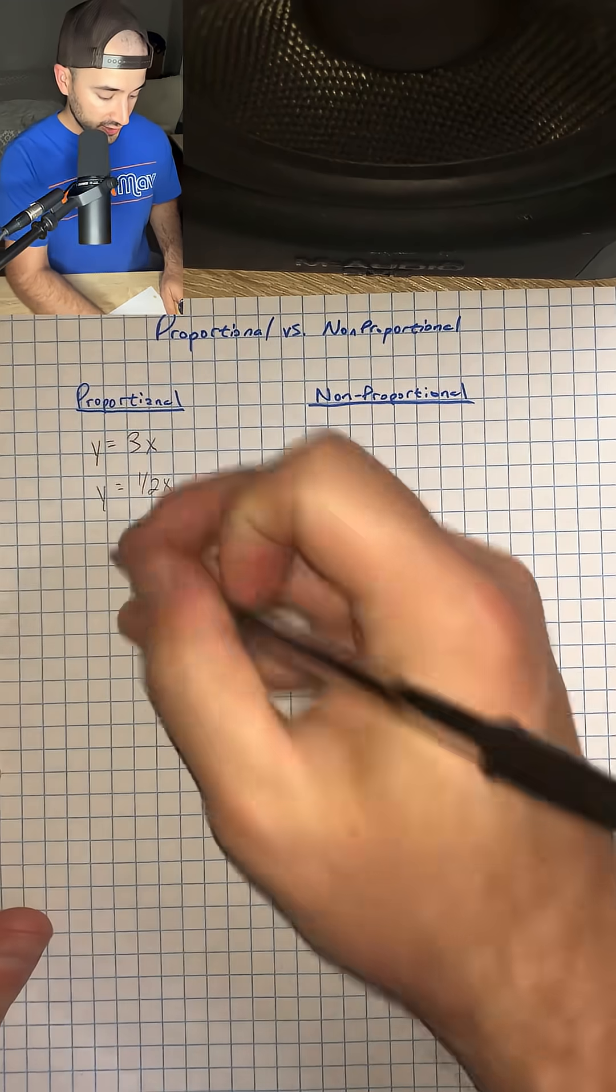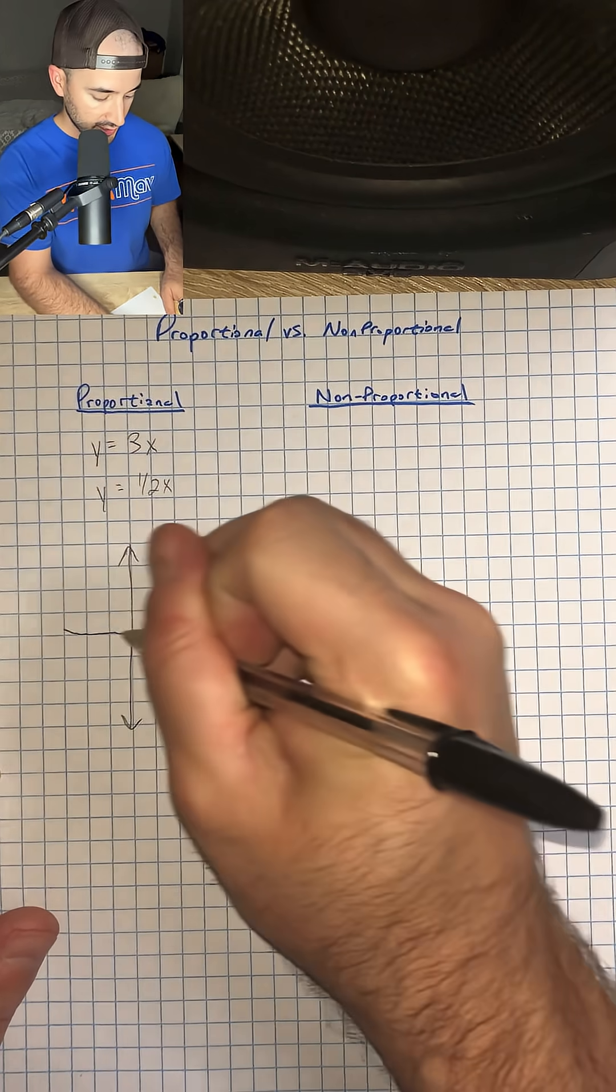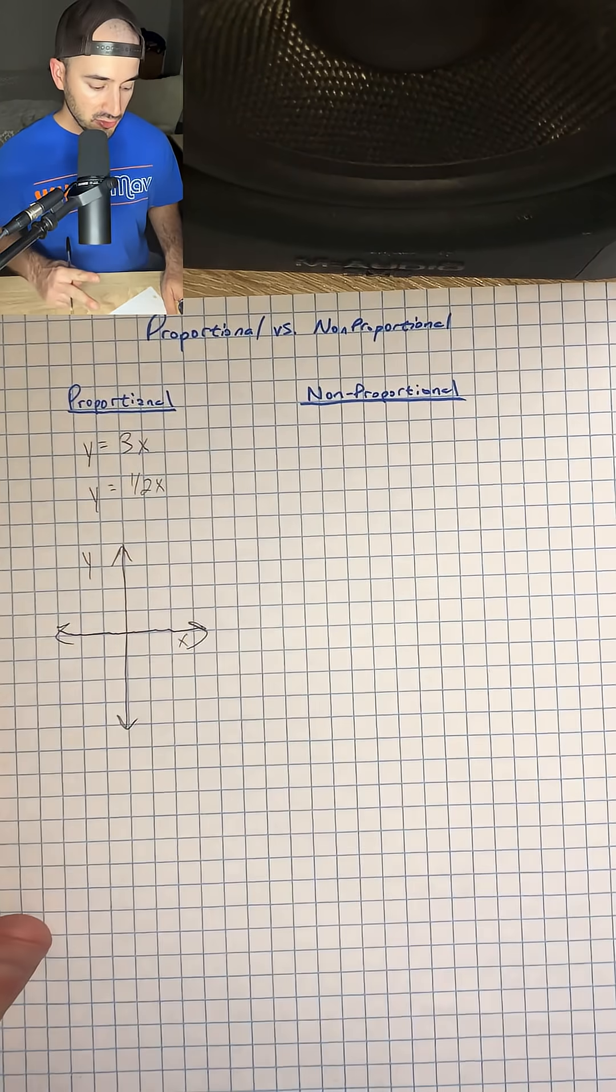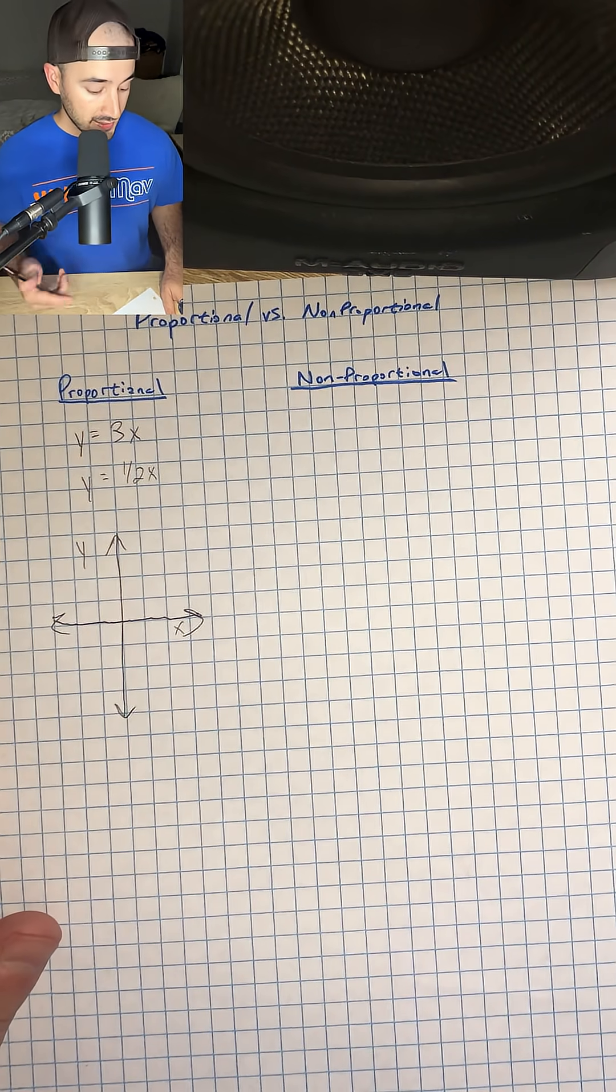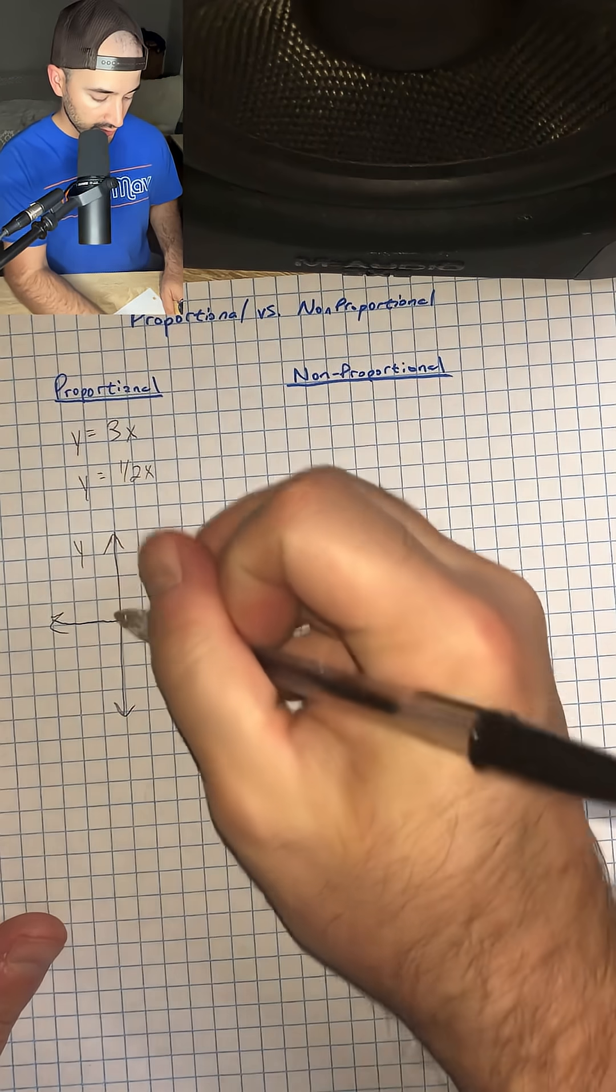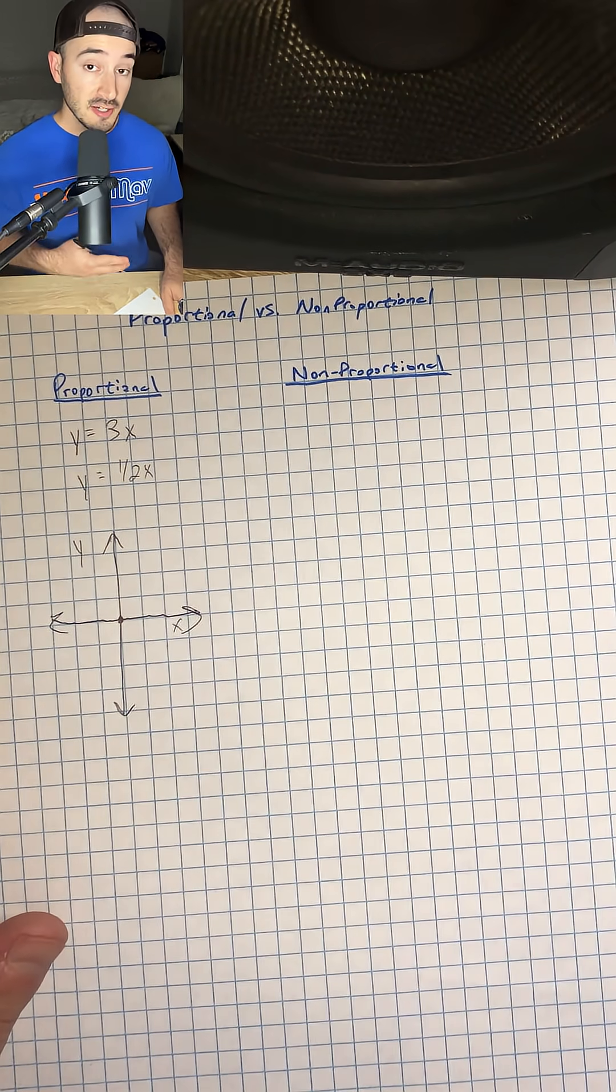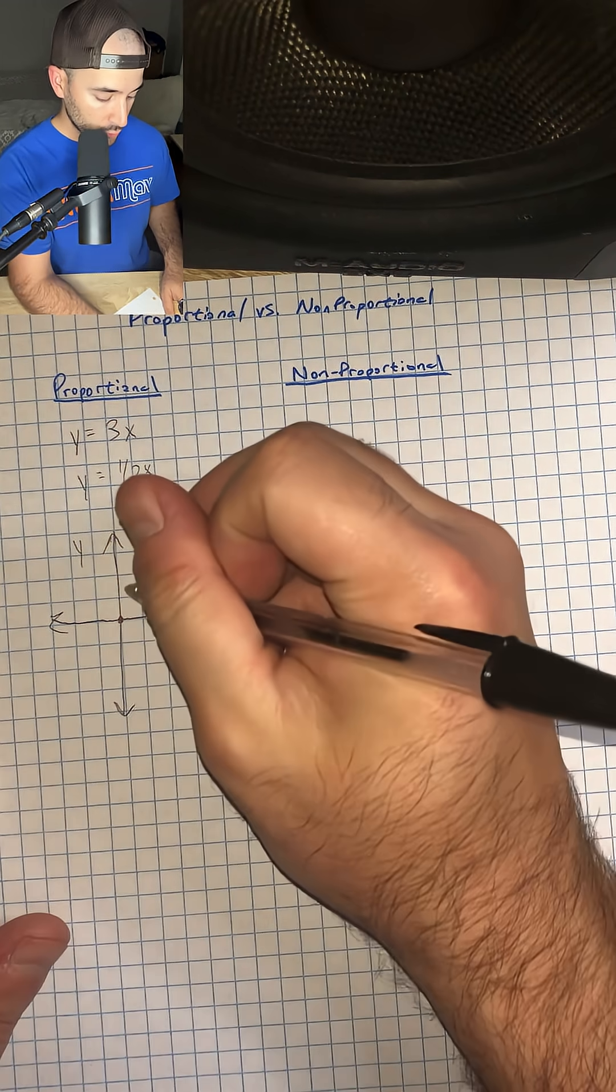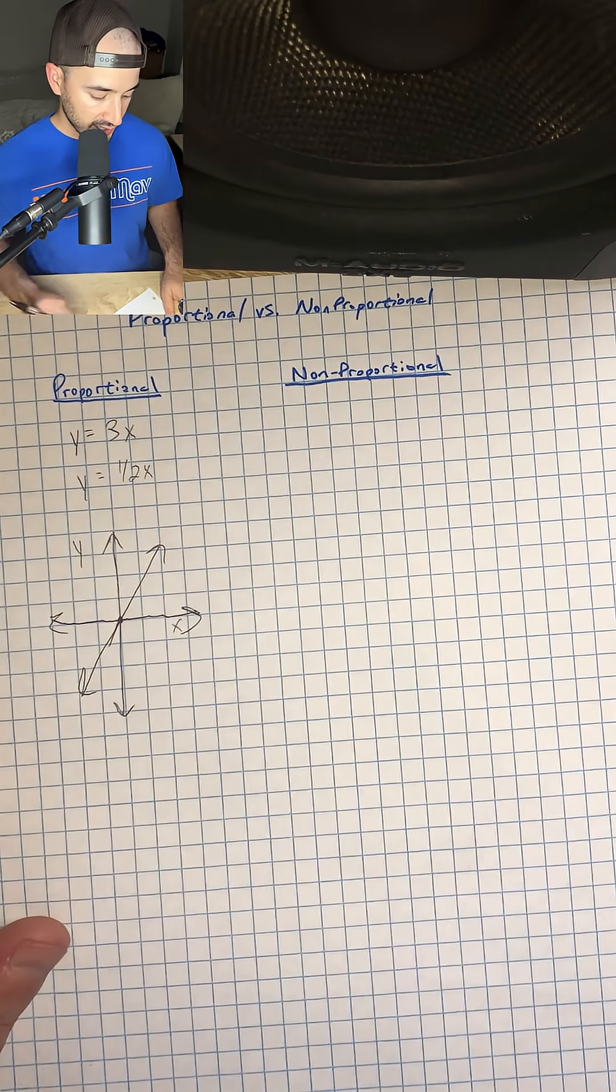Now on a graph that's going to look like this. So here's my y-axis and my x-axis, and the two things we need in order for a relationship to be proportional is it has to be a straight line and it has to pass through the origin. The origin is zero zero right there, and as long as it's going through that point and is a straight line, then it's going to be proportional.